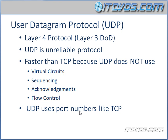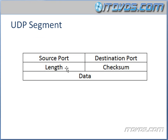UDP uses port numbers just like TCP does. Now let's take a look at a UDP segment. This is much, much smaller than a TCP segment, and therefore is faster — less data transferring over the wire. All that's included is a source port, a destination port, a length — basically how big it is — and a checksum to make sure there wasn't any corruption. And here's the data that's encapsulated in this UDP segment.